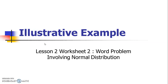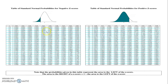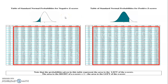Let me start by introducing the Table of Standard Normal Probabilities, or the Z-table. This table will give you the value of the probability or the area to the left of the given value of Z, or the standard score. The first column and first row represent the value of Z, and the other values you can see are the computed probability or area to the left of a specific value of Z.